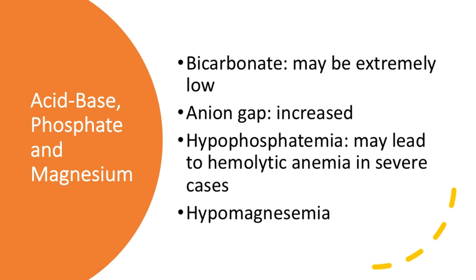In acidosis, bicarbonate may be low or extremely low, and the anion gap is increased. The anion gap is the difference between the main positive cations — sodium and potassium — subtracting chloride and bicarb. Hypophosphatemia is often seen in ketoacidosis and can lead to hemolytic anemia in severe cases. Together with that is hypomagnesemia. After everything else is stabilized and the animal is on insulin with potassium normalized, you start refining your therapy by possibly giving phosphate and magnesium.